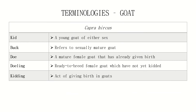Next is the goat. The scientific name of goat is Capra hircus. Kid is a young goat of either sex. Buck refers to the sexually mature male goat. Doe is a mature female goat that has already given birth, while doeling refers to the ready-to-breed female goat which has not yet kidded. Kidding is the act of giving birth in goats.